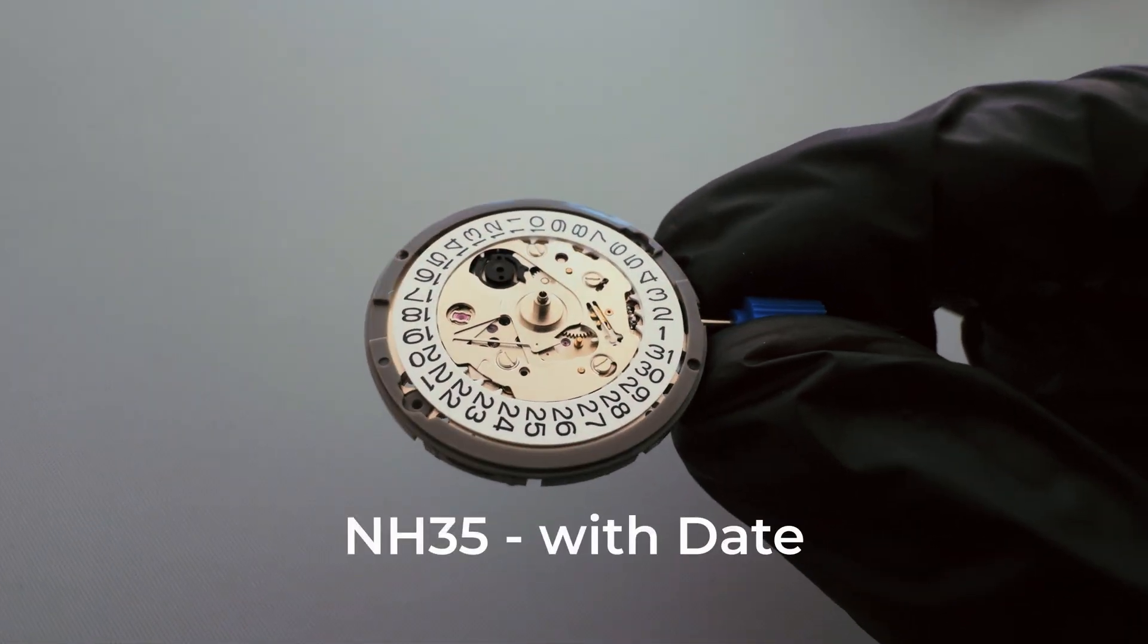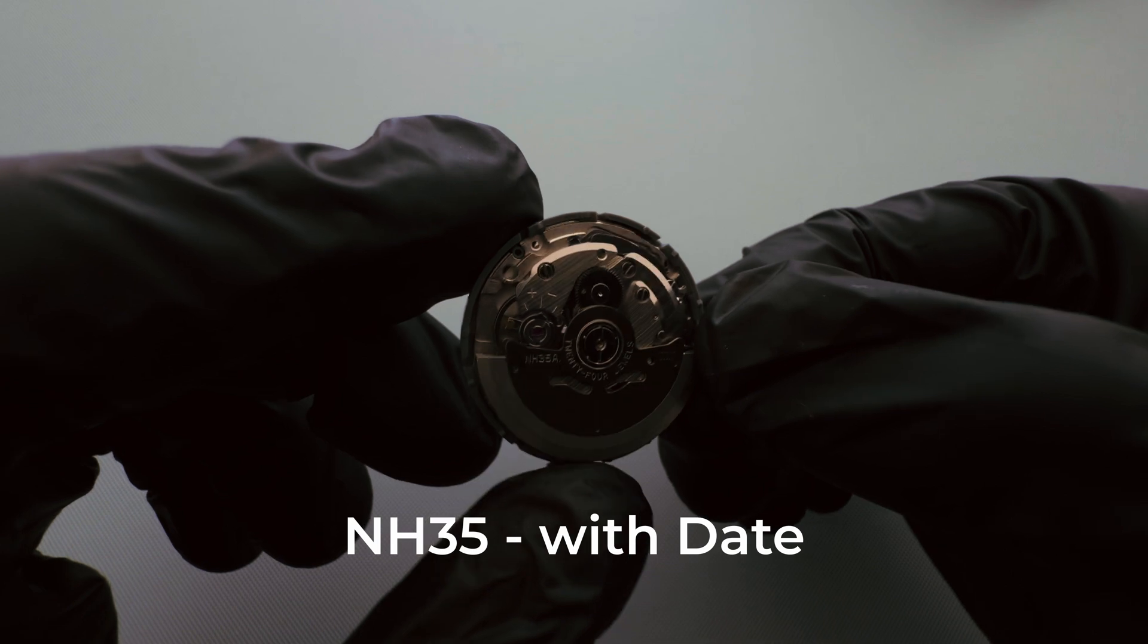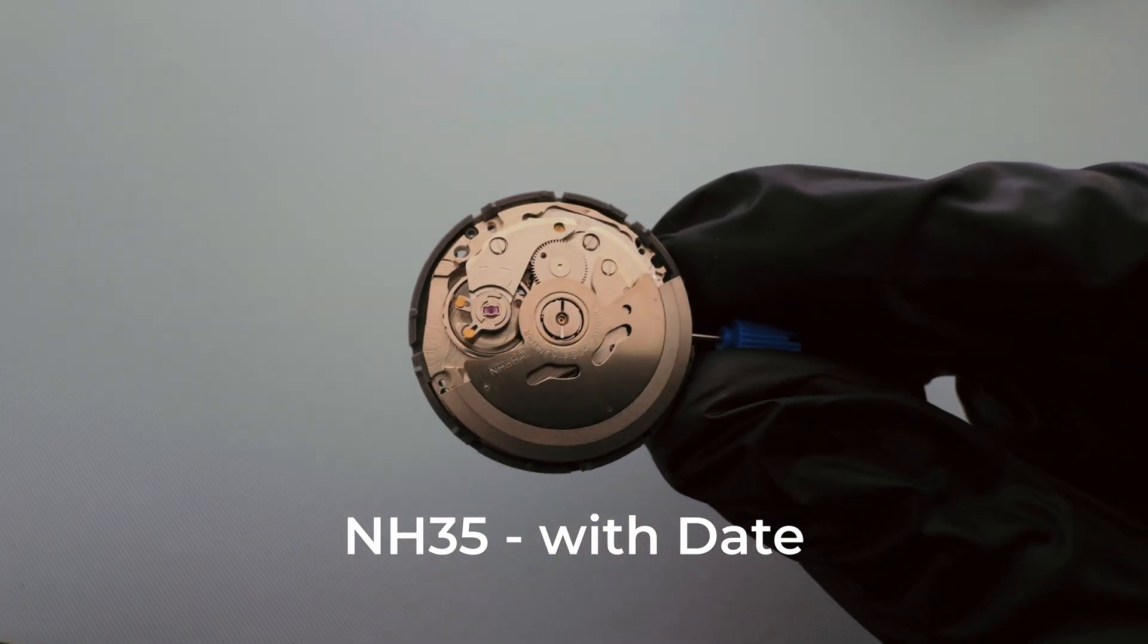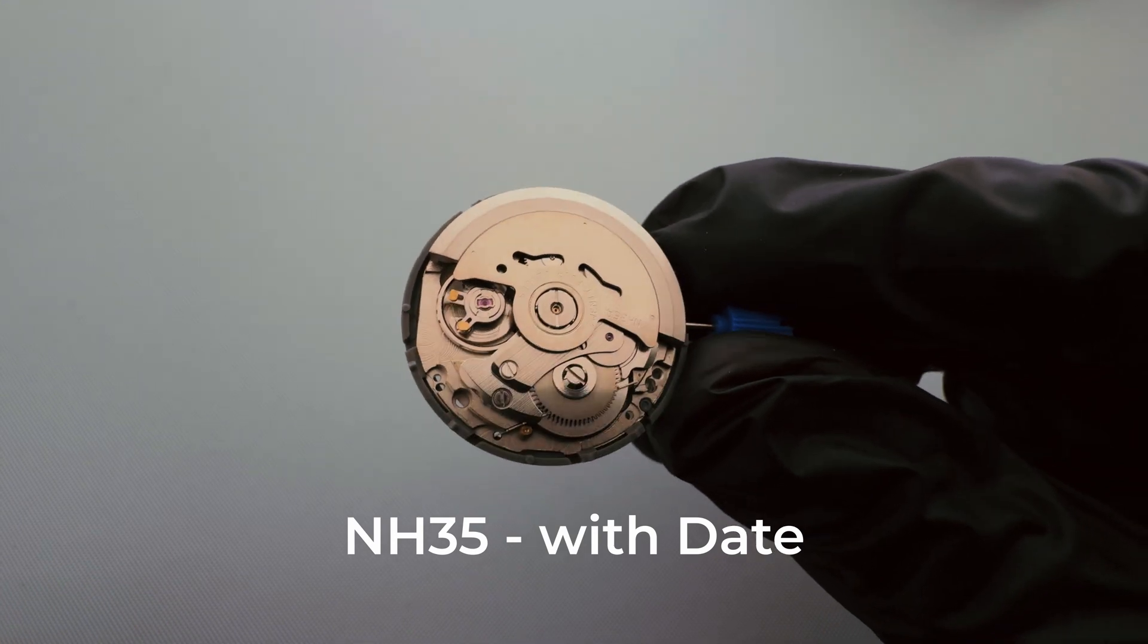NH35, automatic with date. Power reserve, approximately 41 hours. Accuracy, minus 20 to plus 40 seconds per day. Hacking and handwinding supported.